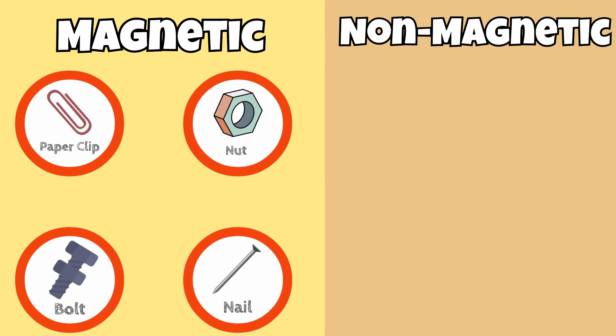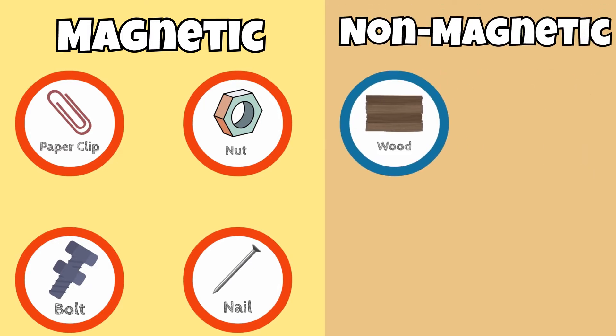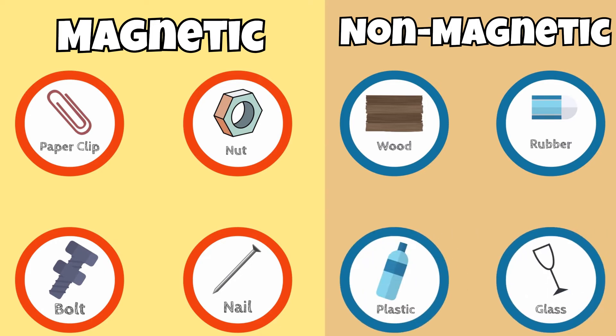Items that are not attracted to magnets are wood, rubber, plastic, glass, and paper.